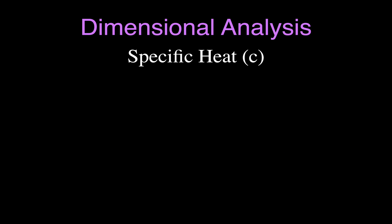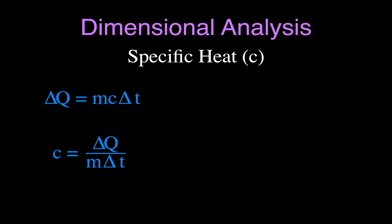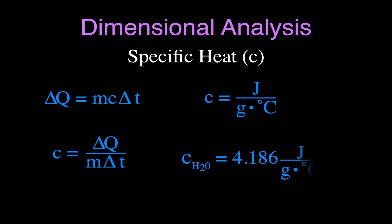For number three, we're talking about specific heat C. The equation is: change in heat equals mass times specific heat times change in temperature. Solving for C gives us change in heat divided by mass times change in temperature, which yields units of joules per gram per degree Celsius. Every material has its own specific heat — for example, water has a specific heat of 4.186 J/(g·°C), meaning it takes 4.186 joules to raise one gram of water by one degree Celsius.